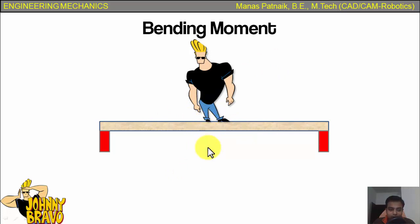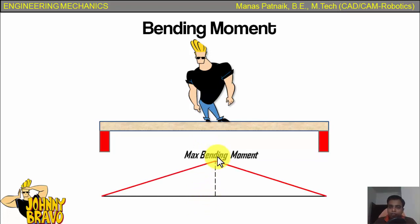Why does the plank break at the center and not somewhere else? This is due to the bending moment distribution pattern, which is maximum at the center of a simply supported beam.